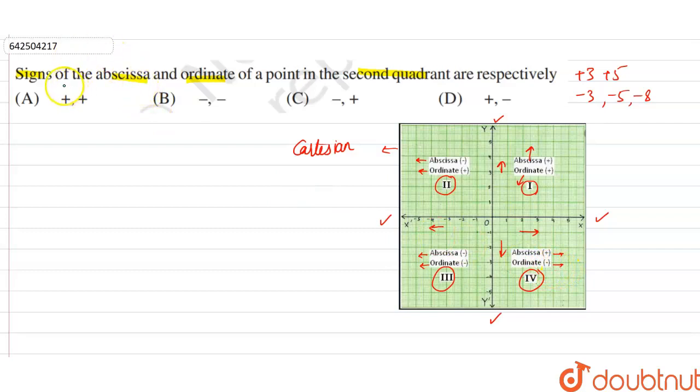Now, if you can observe from the question, signs of abscissa and ordinate of a point in second quadrant. So, if you can observe, this is our second quadrant.